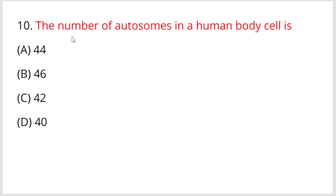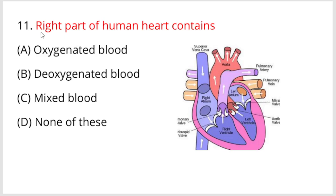Question number ten: The number of autosomes in a human body cell is? In human body cells, the number of autosomes is 22 pairs, that is 44. Option is 44.